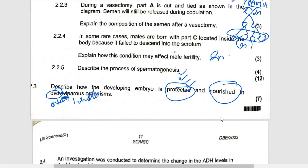Because it is ovoviviparous, you need to talk about it being protected by the mother. Then number two is nourishment — how is it nourished? The embryo receives nutrients not from the mother but from the egg yolk. That's why you have the word 'ovo' — not the mother. It also receives nutrients from the albumin, that is the outer white part. When you eat an egg, that white part is what you call the albumin. That's what you need to answer on that.